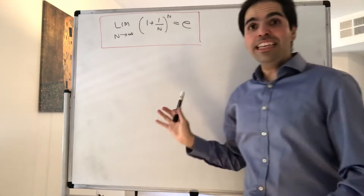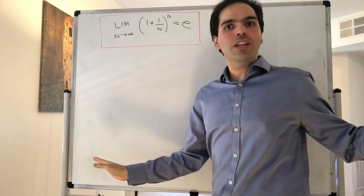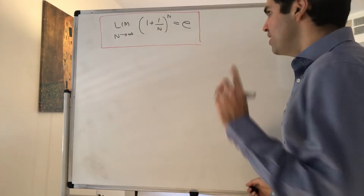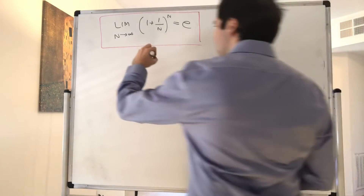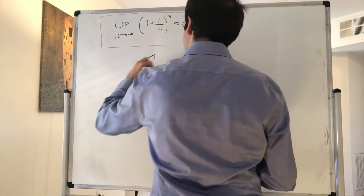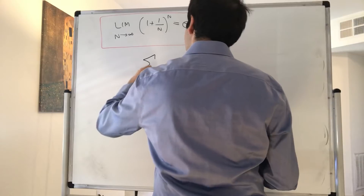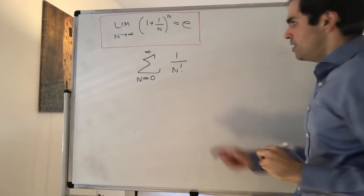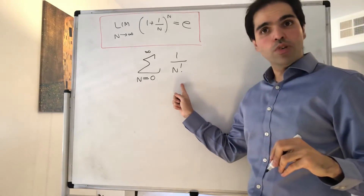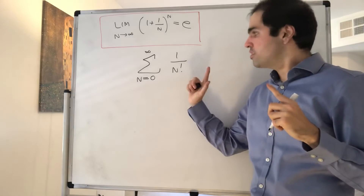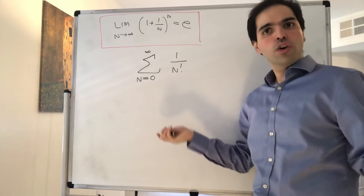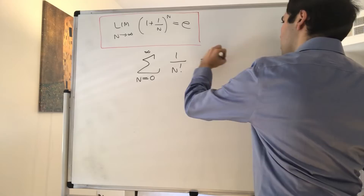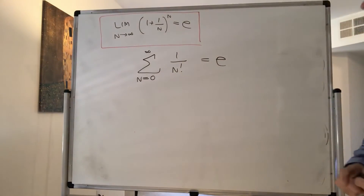What is e? So far we have not defined what e is, so we can define it to be whatever we want. Consider the following series: the sum from 0 to infinity of 1 over n factorial. Using the ratio test, you can rigorously show that this converges, therefore it goes to a limit, and let's define that limit to be e.